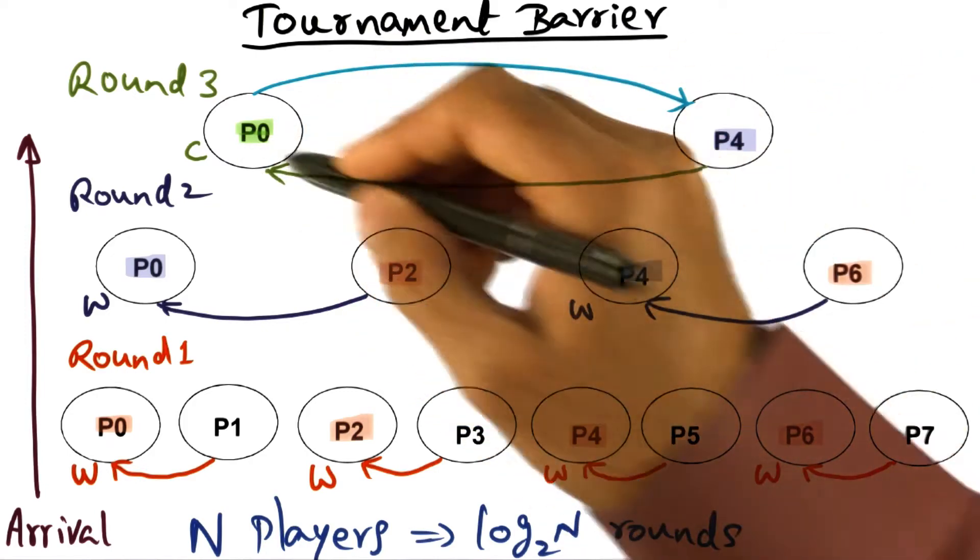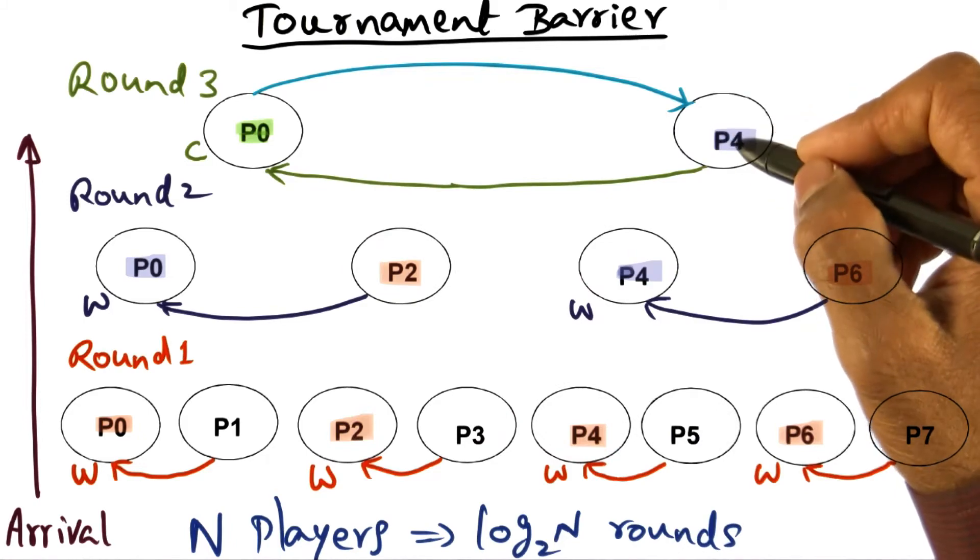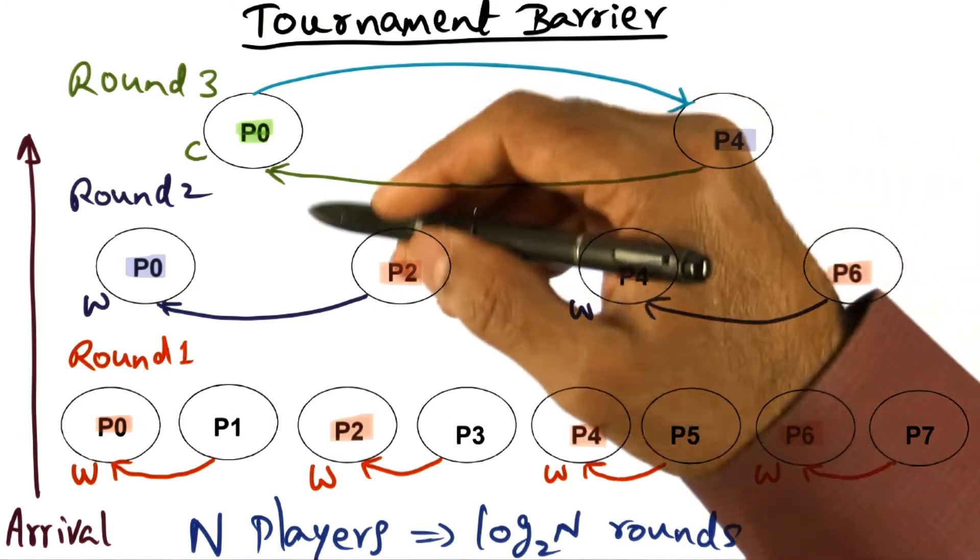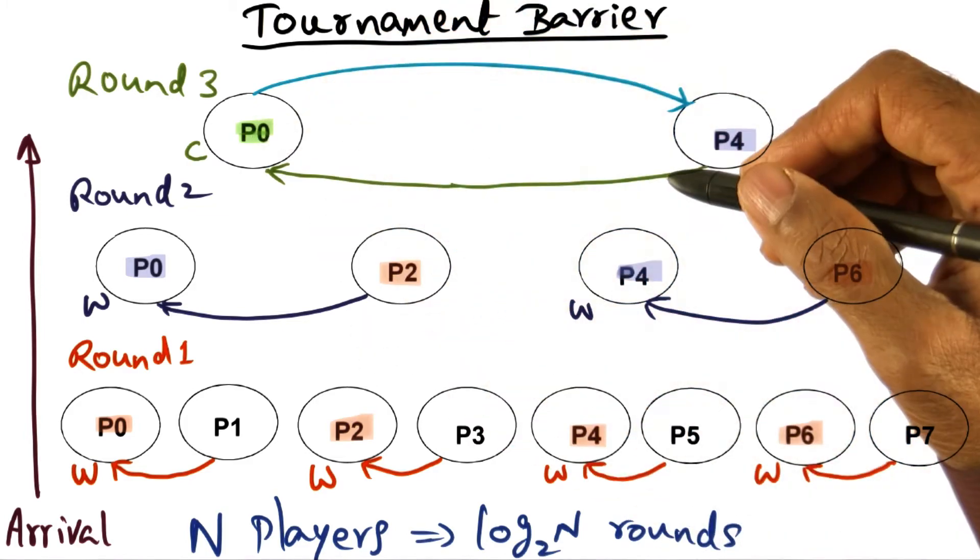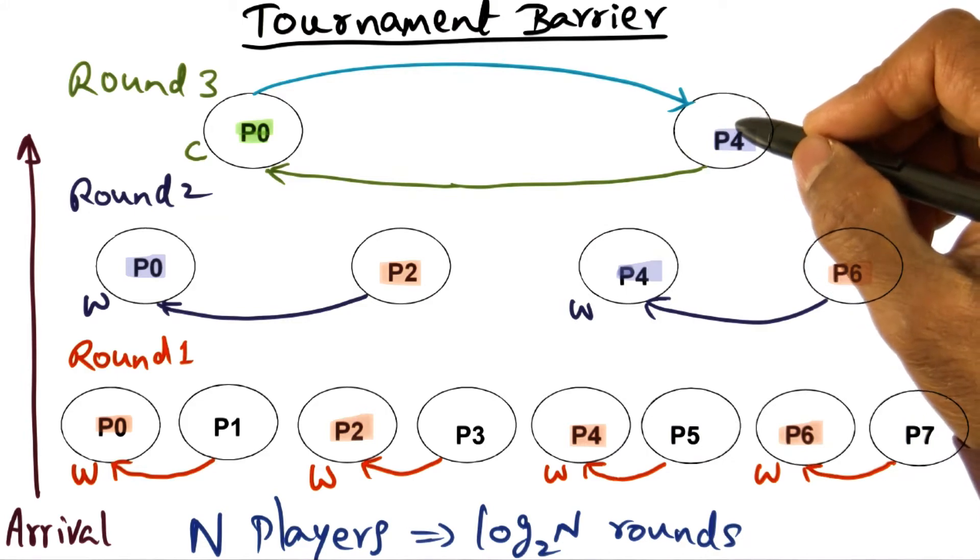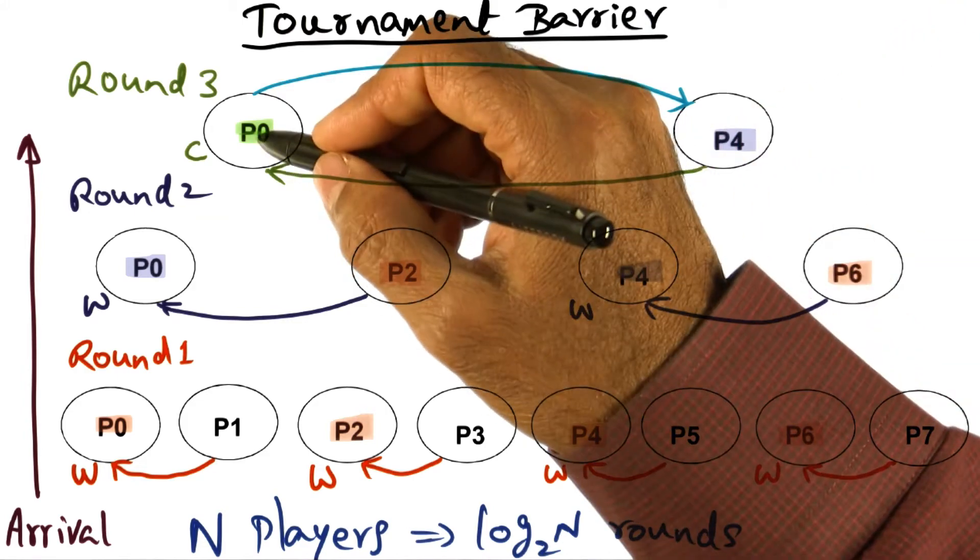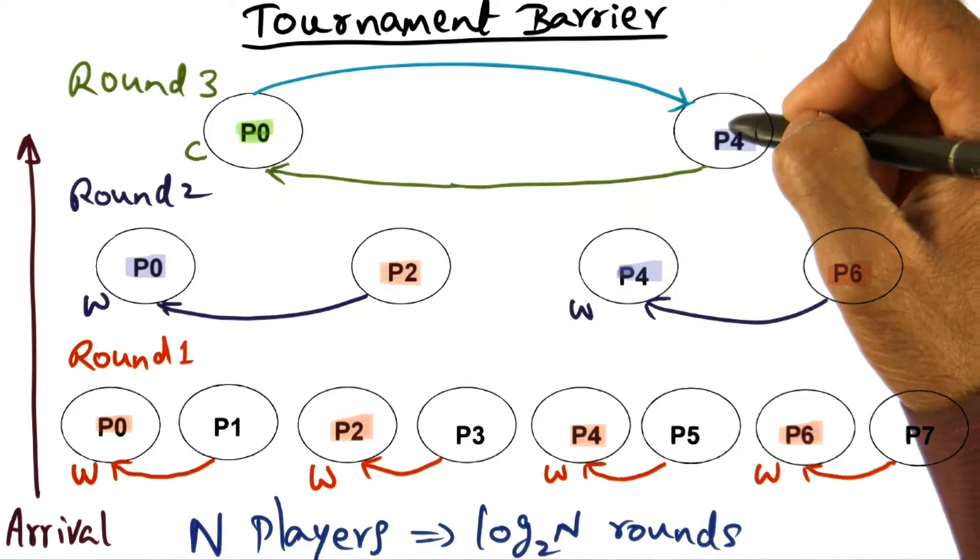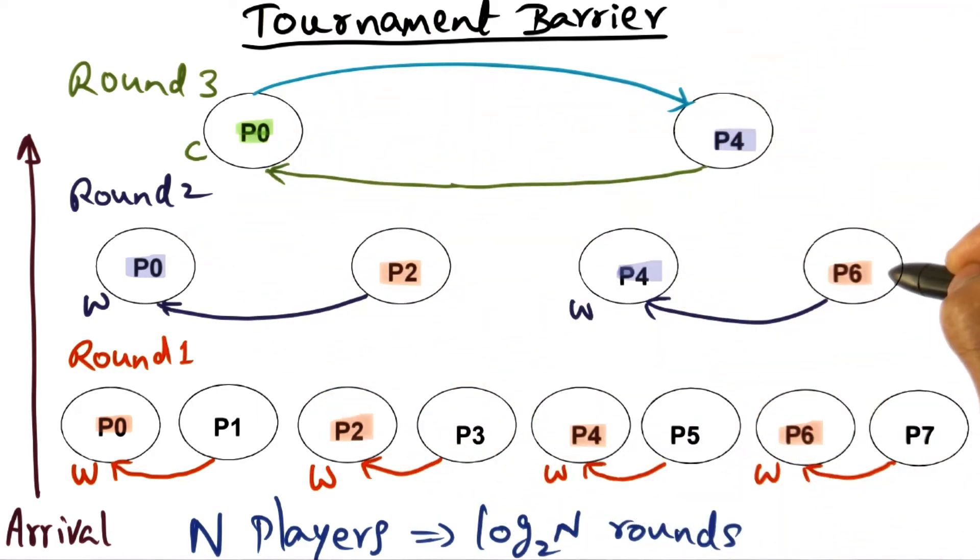In other words, at this point, P0 is awake of course, and he's also waking up P4, saying that the barrier is done. And now both of these guys can go to the next level and do the honors at every level. So just as P0 comes in shaking hands with P4, what P0 is going to do is go to the next round and shake hands with P2, P4 go to the next round and shake hands with P6, and so on.